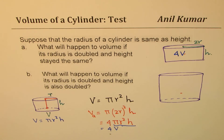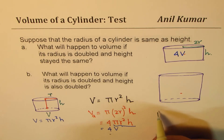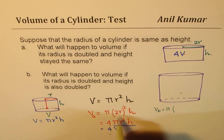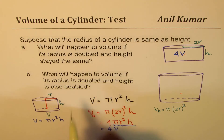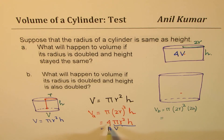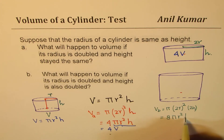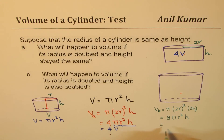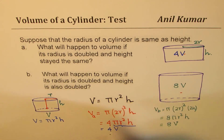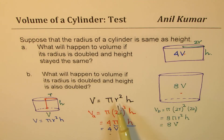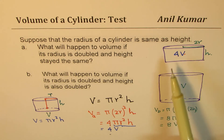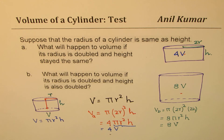Now for part B, I could write it as pi times 2R whole squared times 2H — radius is double and height is also double. So this becomes 4 times 2, which is 8 pi R squared H. So at this time it becomes 8 times the original volume. So if you double the radius, volume becomes 4 times, but if you double only the height, volume is twice. So that is very interesting and important to understand when you are working with volume of a cylinder.